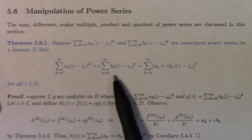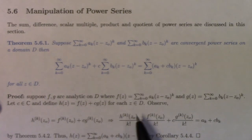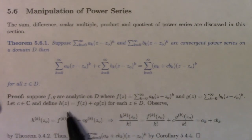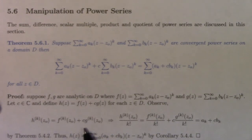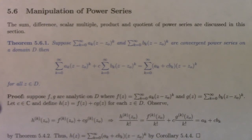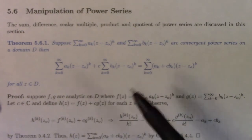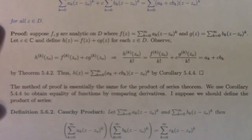First of all, we can add series by adding the components — that's a theorem. The proof is pretty simple. Suppose you've got analytic f and analytic g with power series expansions. Define h to be the sum f plus c times g of z. Calculate its kth derivative — by Taylor's theorem that's given by the coefficients. So h of z is exactly that. You prove the series equals that series by looking at the derivatives of those series and showing they match up.